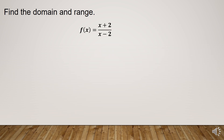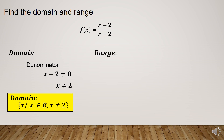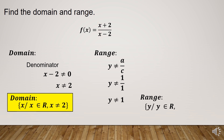Next example: f(x) = (x + 2) / (x - 2). For the domain, the denominator must not be equal to 0, so x is not equal to 2. The domain is the set of x such that x is an element of the real numbers, but x must not be equal to 2. For the range, using y is not equal to a over c: the coefficient of x in the numerator is 1 and in the denominator is also 1. Therefore, y is not equal to 1 over 1, or y is not equal to 1. The range is the set of y such that y is an element of the real numbers, but y must not be equal to 1.